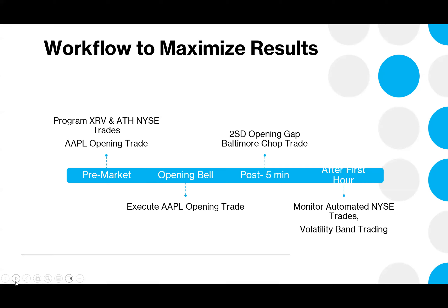Right at the five-minute mark, we do an opening gap trade — I call it the Baltimore chop. That's a two-standard-deviation opening gap. You've got a 95% confidence interval around the mean, a 95% probability that you're going to get a mean reversion. It's a statistical model that handicaps the market and gets us in front of those opportunities from about the five-minute mark until about 7 a.m. Pacific / 10 a.m. Eastern, when you get a distribution shift. After the first hour is over, this is where we get into the volatility bands.